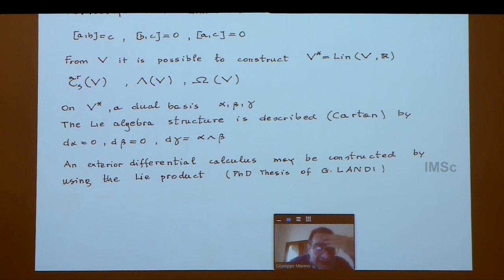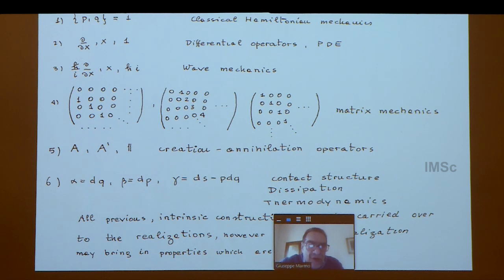On V-star, a dual basis would be given by forms characterized by the formula you see here. This is Cartan's description of Lie algebra. At this abstract level, you can develop an exterior differential calculus at a purely algebraic level.